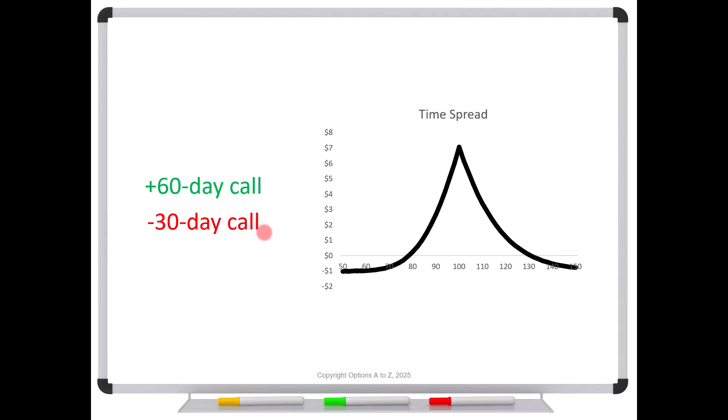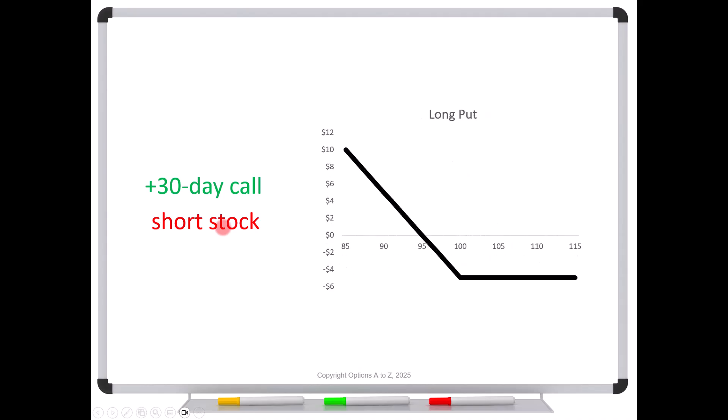Remember, an exercise is always for the shares. A lot of times people think, oh, they're going to take my call. No, they won't. They will always exercise for the shares. So if you don't have the shares, you have to deliver them anyway, and that's going to leave you with a short stock position. Now what do you have? Well, now you've got 100 shares short. Your 60-day call is now a 30-day call. You're long a call, short stock, which is synthetically the same as a long put. So look at how it's switched. It doesn't look the same.